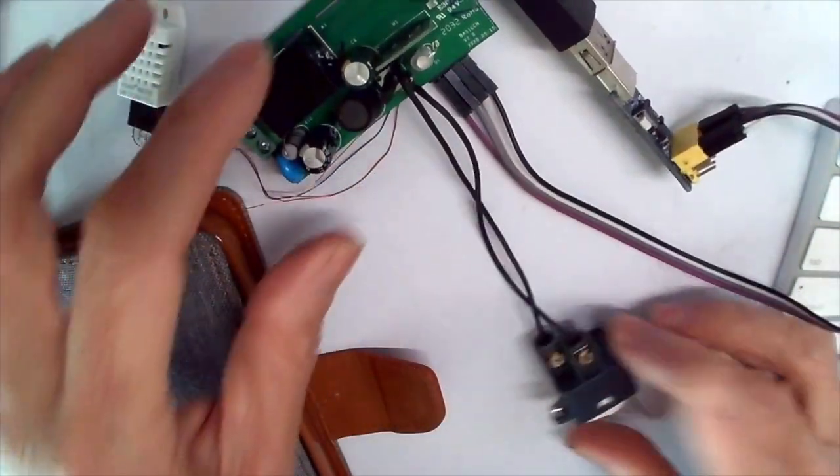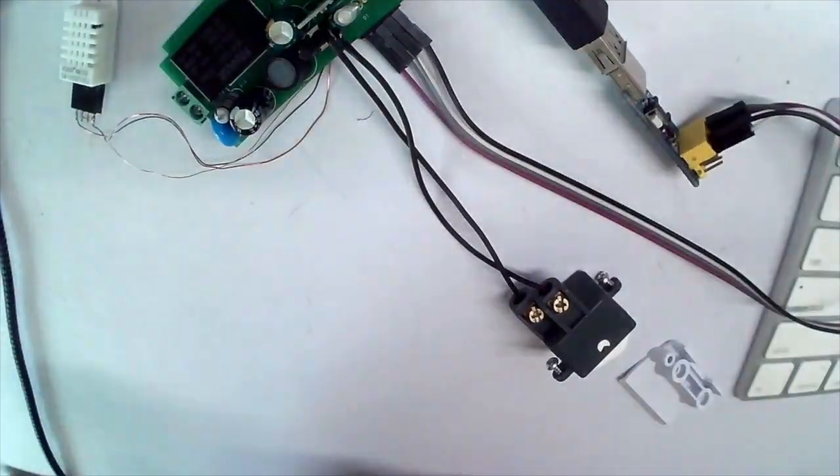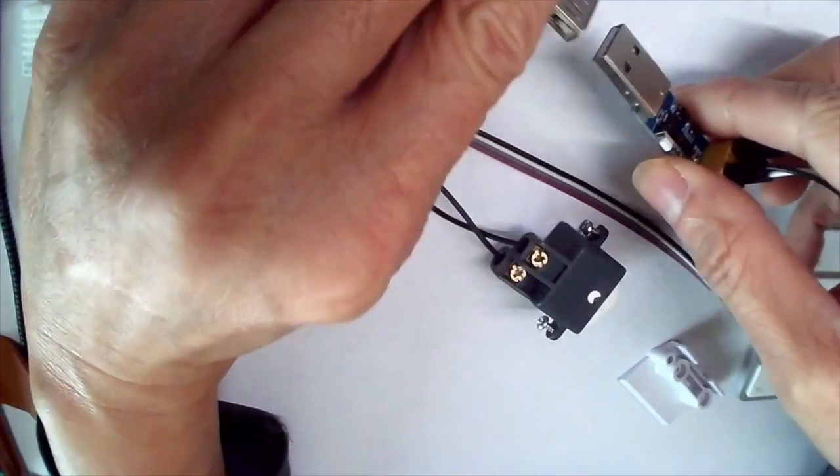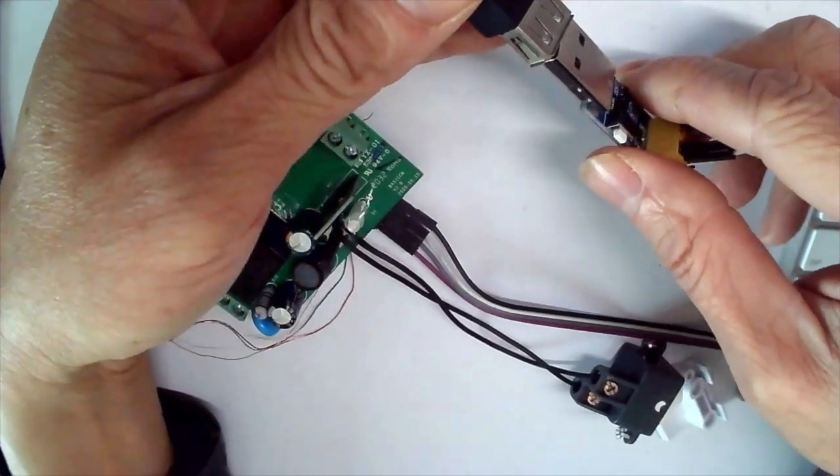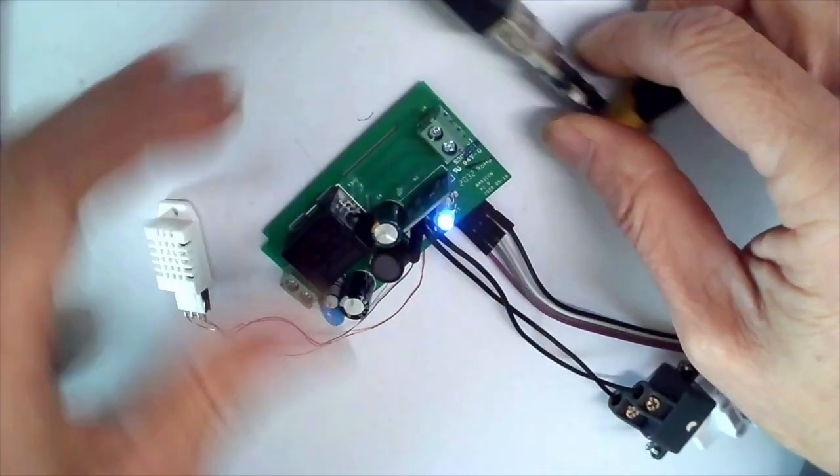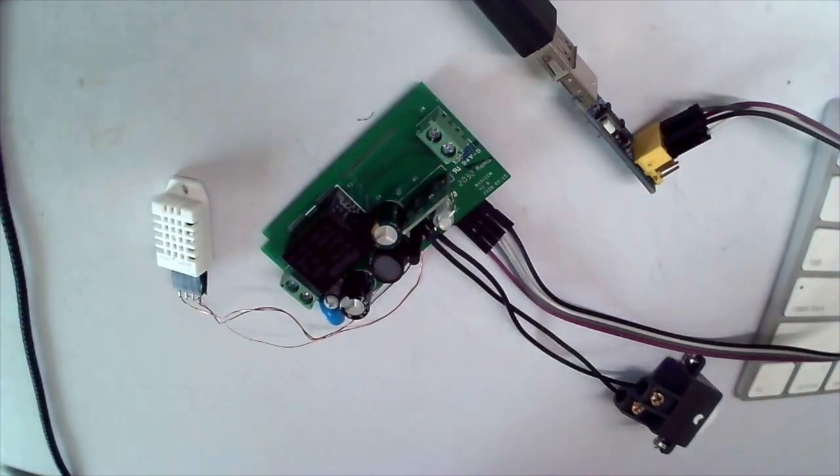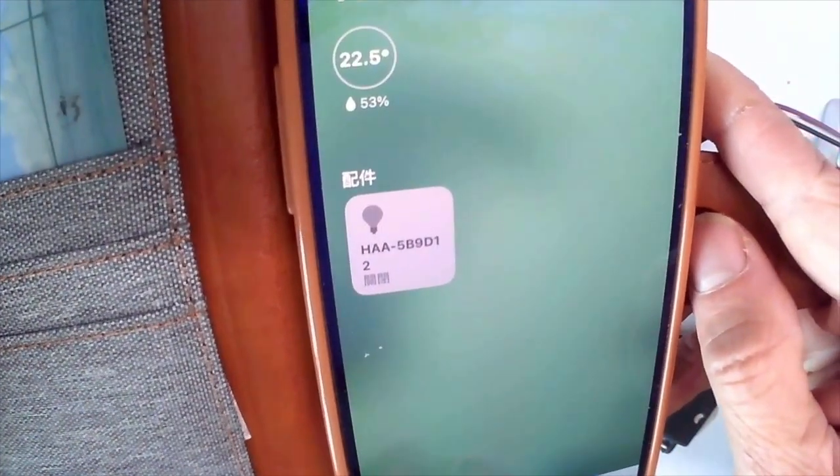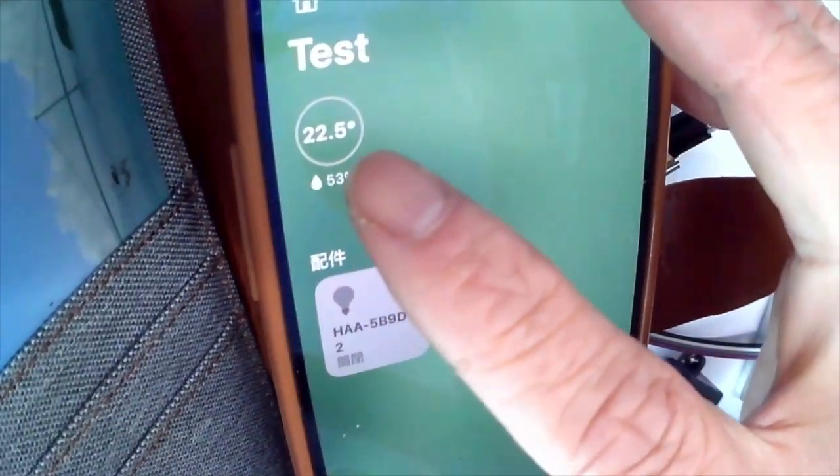It should come up quickly. The program is booting up and connecting. Okay, you can see now it has this sensor. This sensor says humidity is 53 percent, temperature is 22.5 celsius.